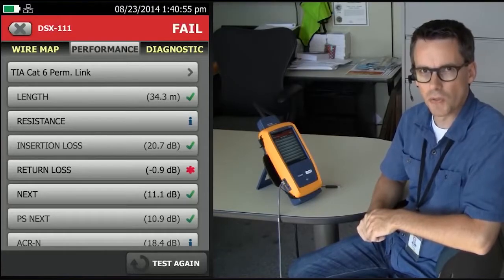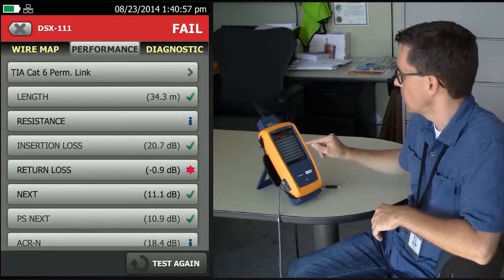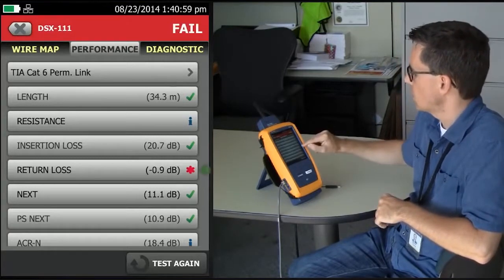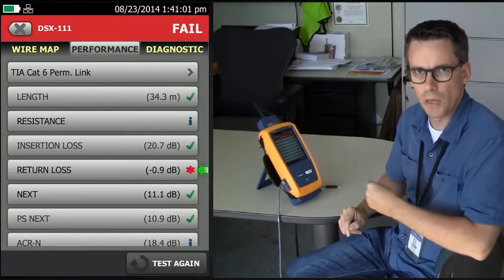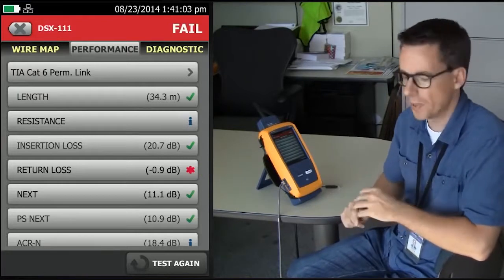In this example, we see return loss failed again, similar to another result. The red asterisk indicating it's a marginal fail, but again, a fail is a fail.